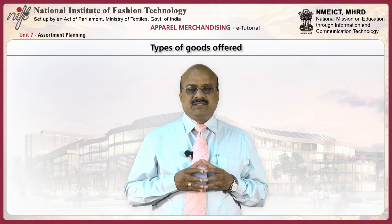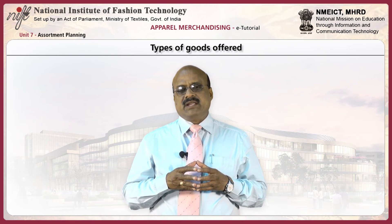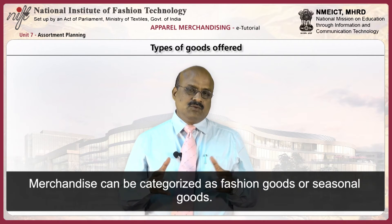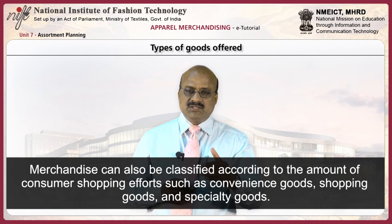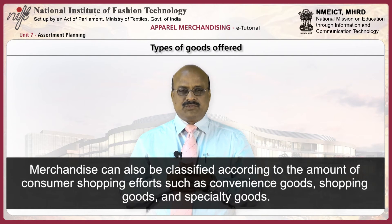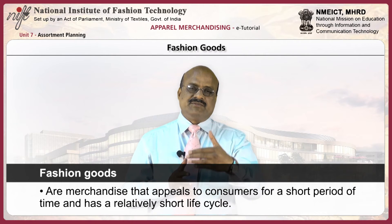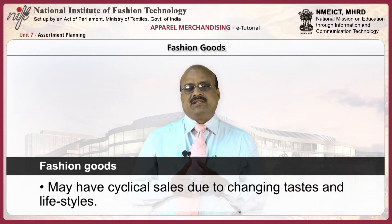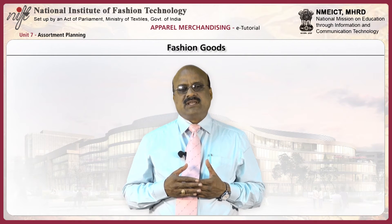A fourth factor the buyer must consider is the type of goods offered, which depends on the merchandise policies of the store. Merchandise can be categorized as fashion goods or seasonal goods, and can also be classified according to the amount of consumer shopping effort such as convenience goods, shopping goods, and specialty goods. Fashion goods may be defined as merchandise that appeals to consumers for a short period of time and has a relatively short life cycle, with cyclical sales due to changing tastes and lifestyles.